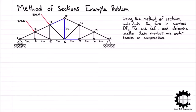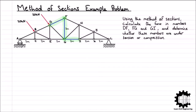We have a roof structure in the shape of a HAL truss, supported by a roller at node A and a pin support at node L. All the horizontal members are 2m in length, and the vertical members are 1m, 2m, and 3m in length from the outer to the inner members respectively. We also have external loads of 20kN applied to nodes B and D, acting perpendicularly to line AF. Using the method of sections, we must calculate the forces in members DF, FG, and GI, and determine whether each member is in tension or compression.